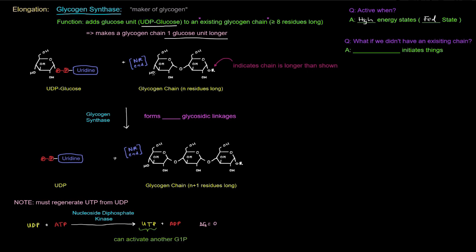So we start off with that UDP glucose and this glycogen chain that's n residues long. And what happens is that the OH group on carbon number four of the non-reducing end of glycogen is going to attack carbon number one on the UDP glucose, kicking off the UDP as a leaving group. And then that glucose unit gets attached to the non-reducing end. So we had two initially and now we've got three there. It was n residues long, but now this glycogen chain is n plus one residues long. So it's one glucose unit longer than it was initially.